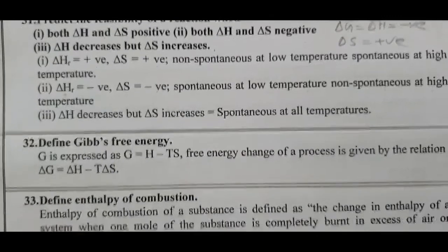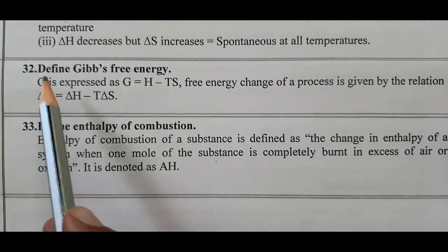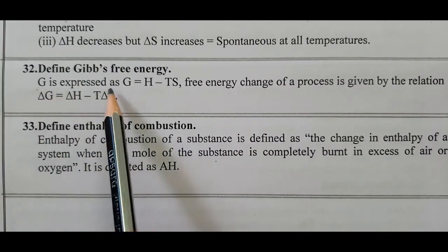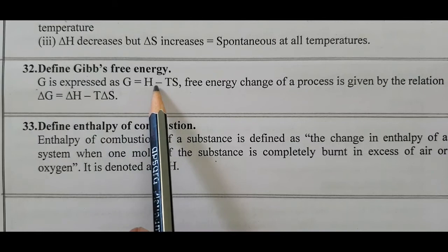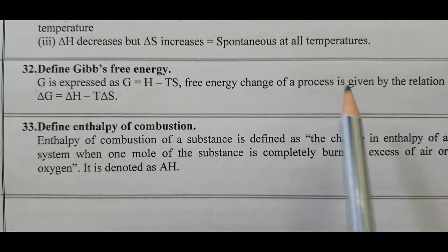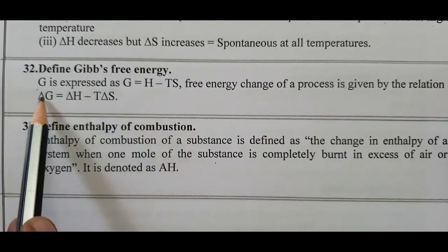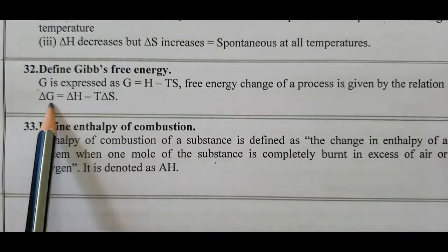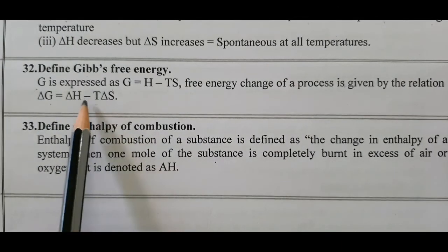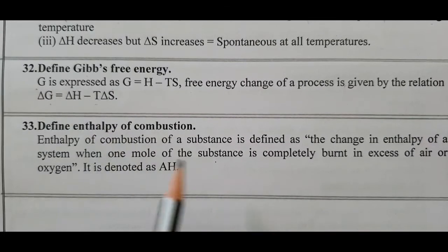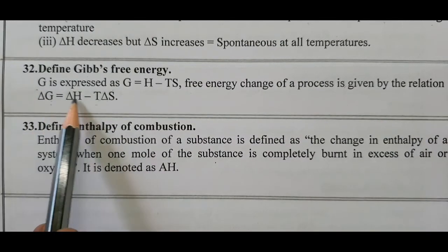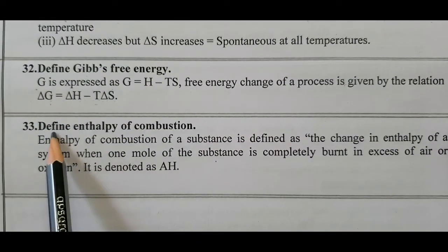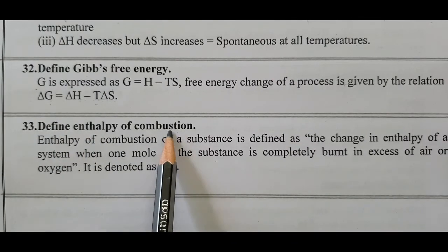Question number 32: Define Gibbs free energy. Gibbs free energy G is expressed as G equals H minus T·S. The free energy change of a process is given by the relation: delta G equals delta H minus T·delta S, where delta H is the enthalpy change and delta S is the entropy change.